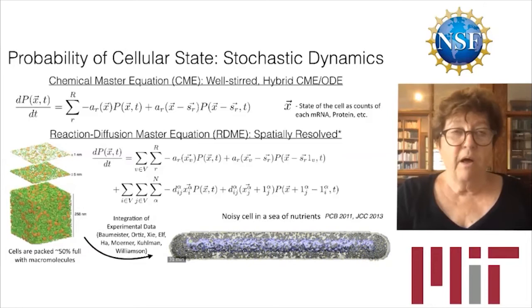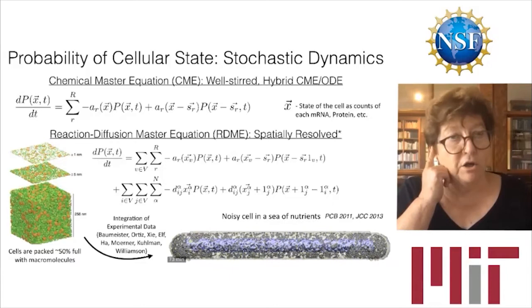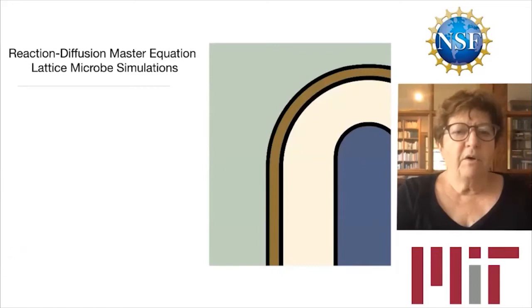Information needed for kinetics and diffusion coefficients was supplied by many experimental collaborators. The cell, when you put in all the biomolecules, is really quite full — anywhere from 40 to 50 percent filled with macromolecules. In our lattice microbe software using the reaction-diffusion master equation, we imagine a cell with outside, membrane, cytoplasm, and nucleoid region.